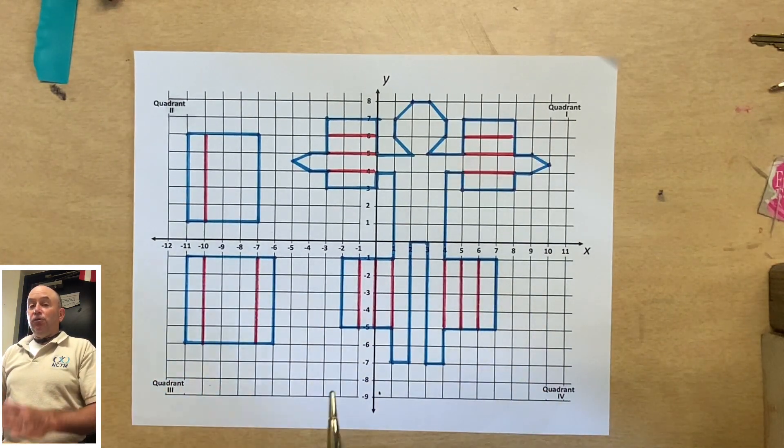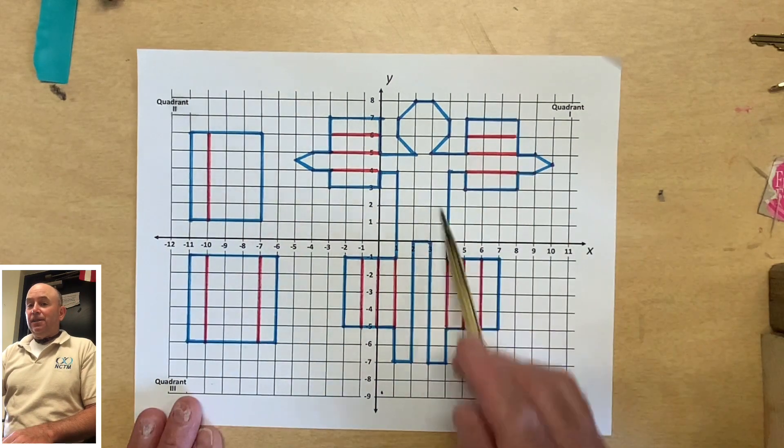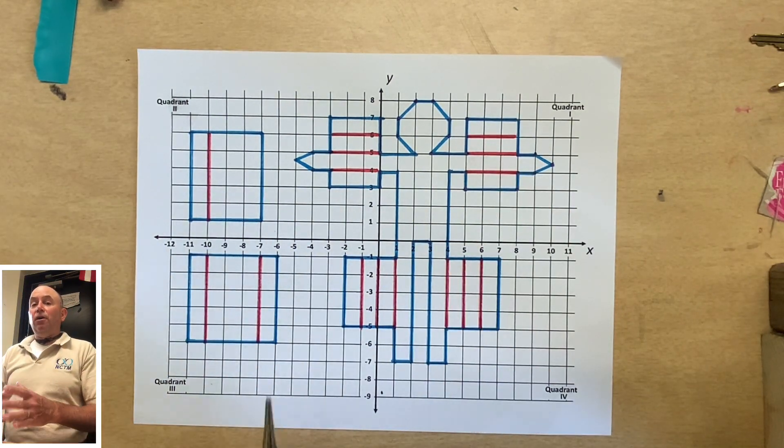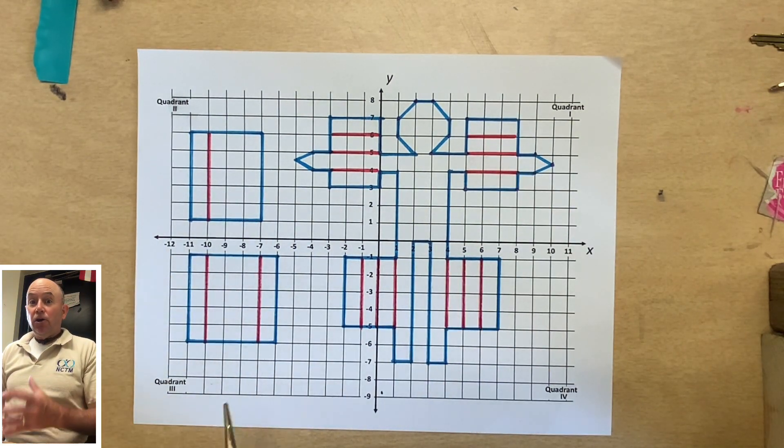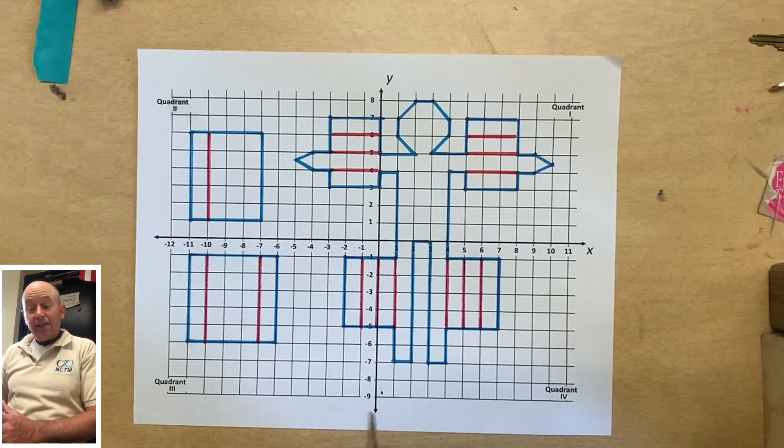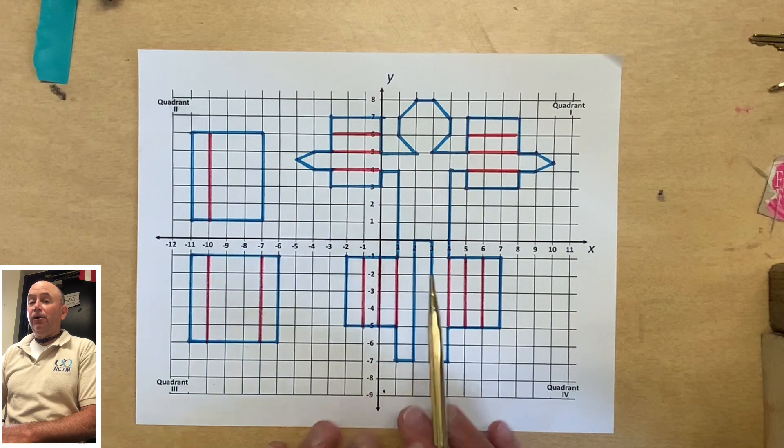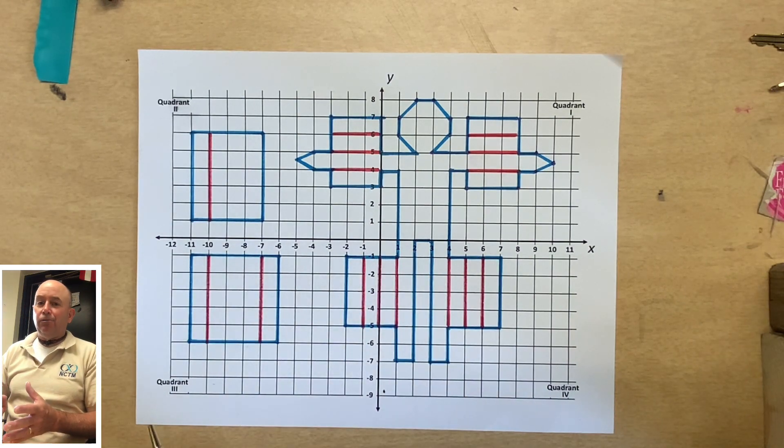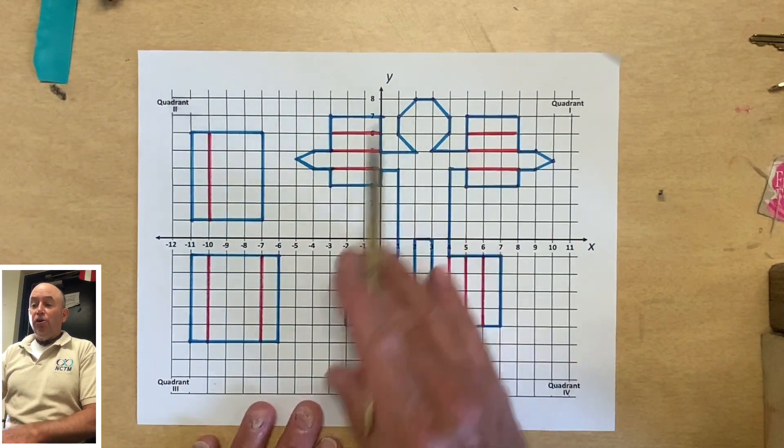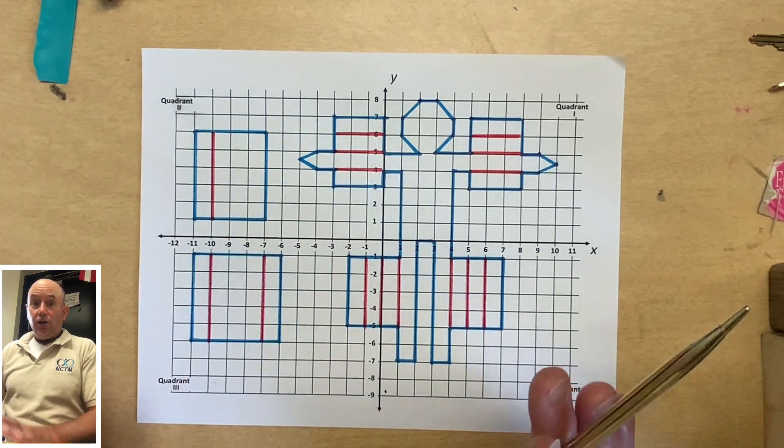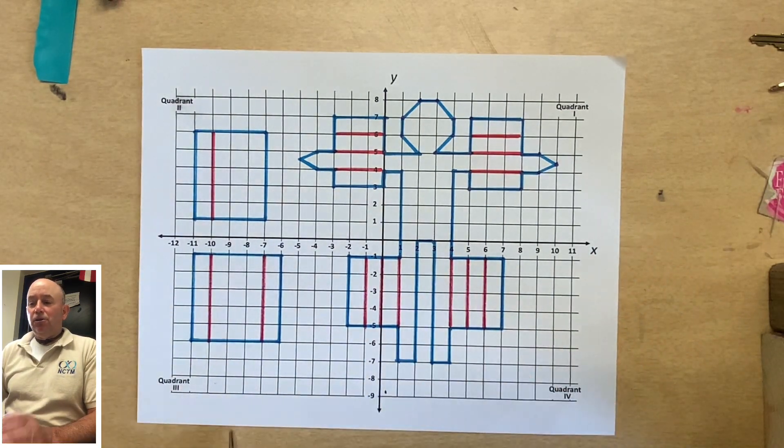Now, if you're looking at what you drew and it doesn't look like this, you're going to want to pause the video and go back and correct any mistakes that you've made. Because if you did everything right on the page, it should look like this.